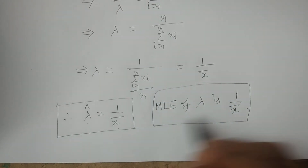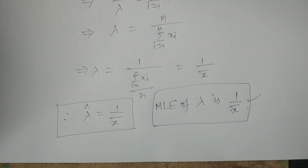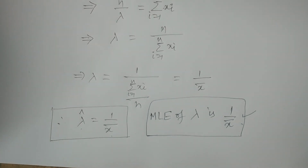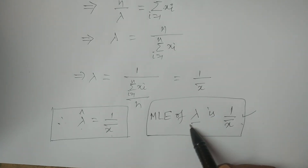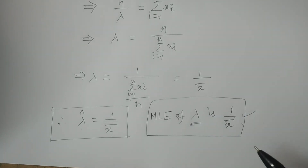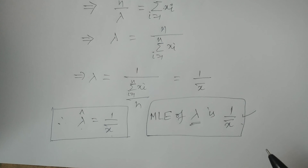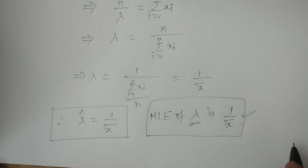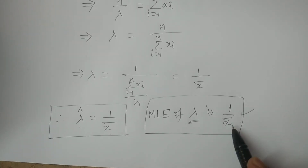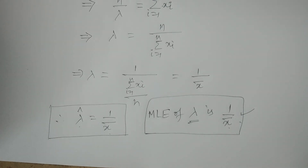This is what we can conclude for the estimation of the population parameter lambda in an exponential population by the method of MLE. By the method of maximum likelihood estimation, we can estimate lambda using 1 / x-bar, the reciprocal of the sample mean. Thank you.